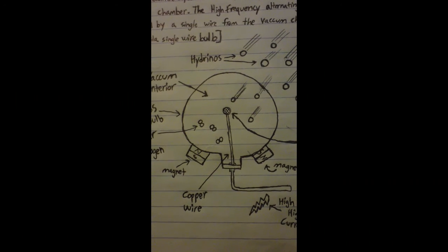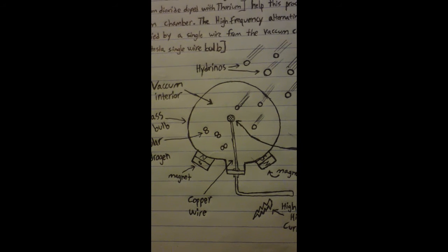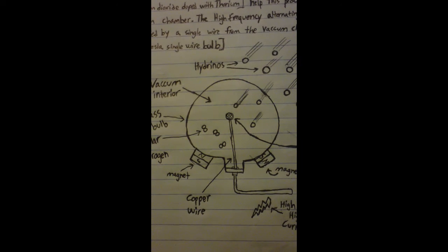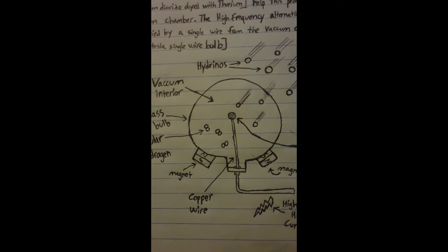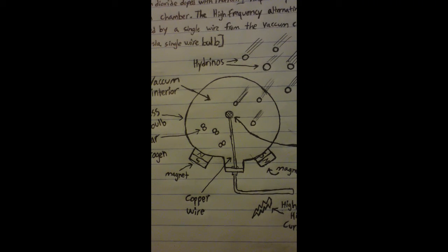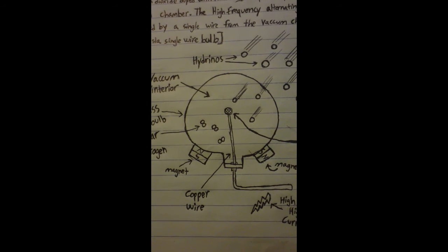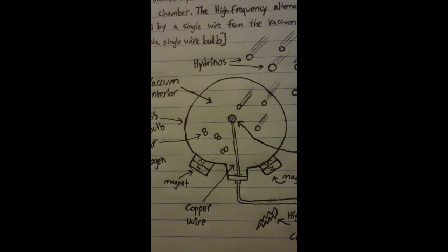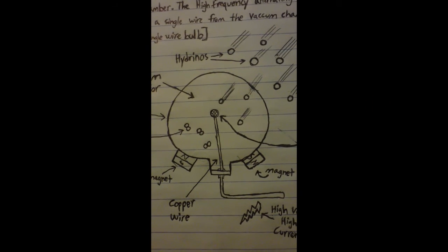On top of the wire in the vacuum chamber is a crystal, called a moray crystal, because Thomas Henry Moray used these in his detector tubes in the early 1900s. The crystal is composed of titanium dioxide, doped with thorium. It sits on the top of the wire in the vacuum chamber.